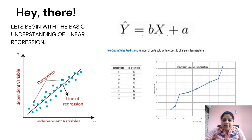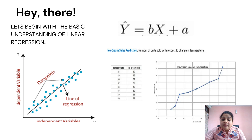To understand it better, let's see an example of ice cream sales prediction. In this dataset, we have two variables: temperature and the number of ice creams sold. Let's see whether the sales of ice cream are dependent upon temperature. We plot this data on the x-axis and y-axis — x-axis contains the number of ice creams sold and y-axis contains the temperature. At 28 degrees, the number of ice creams sold is 10; at 29 degrees, 15 are sold. We can see that ice cream sales clearly increase with temperature, rising from 10 to 72 as temperature goes from 28 to 40 degrees.